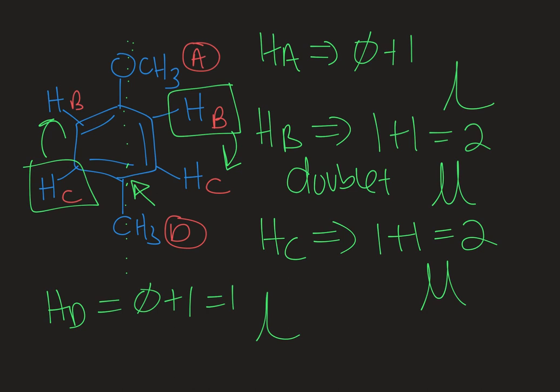Splitting is very important and gives us a lot of information, but it's only part of the puzzle. Integration — the relative number of each type of proton — and chemical shift — where the signal shows up on the proton NMR spectrum — are the other pieces. We really need all of them to solve a complex spectroscopy puzzle. This is how you interpret splitting in the proton NMR. If you found this video helpful, please like, subscribe, and share with your friends.